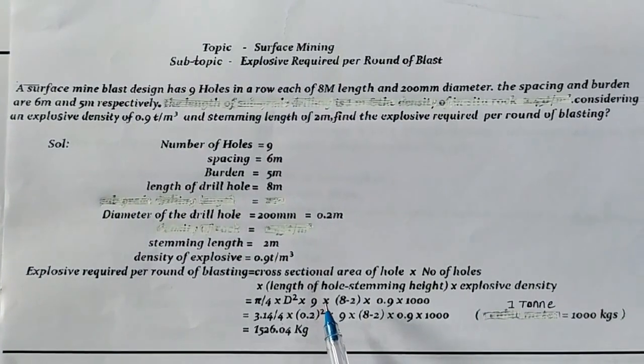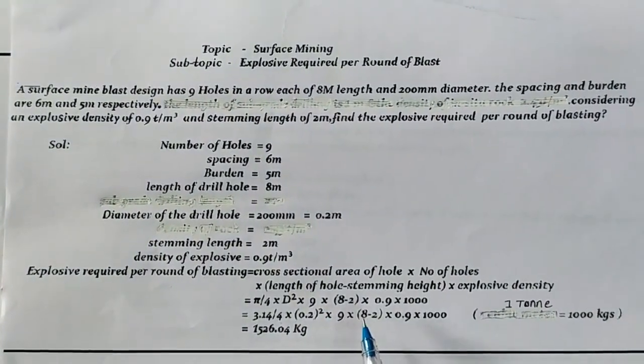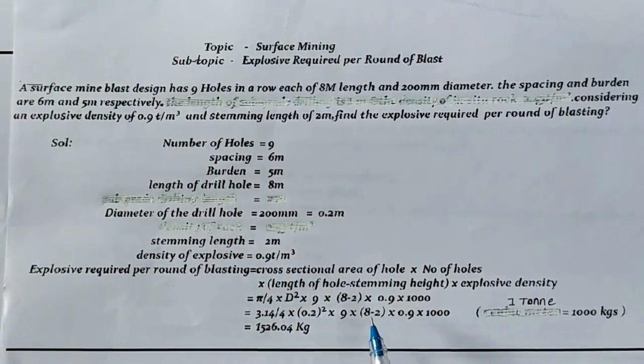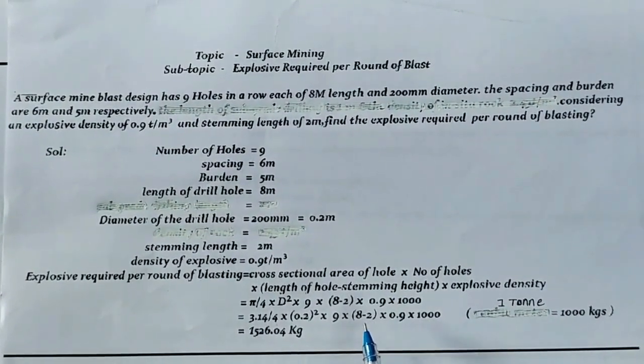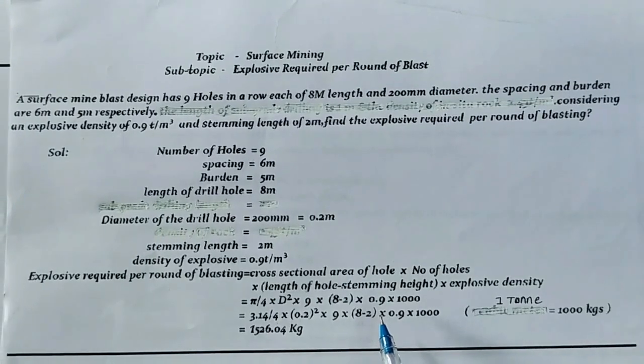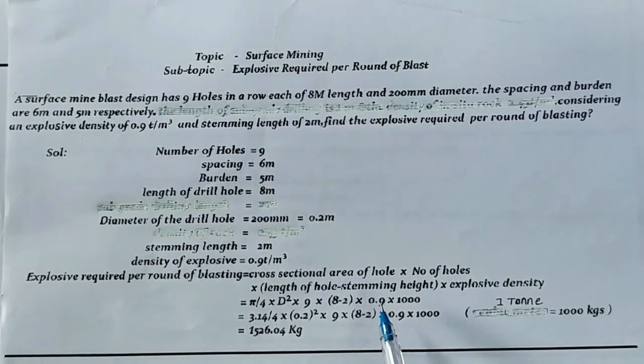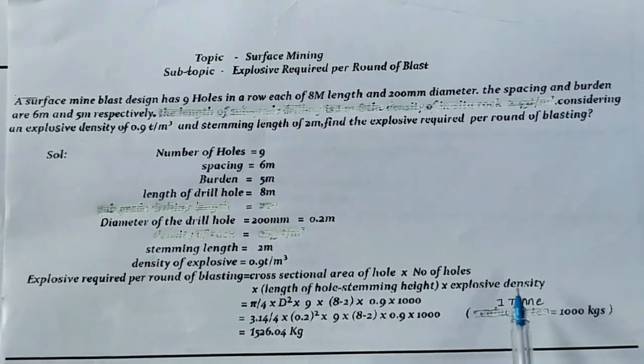9 is the number of holes. Length of each hole minus the stemming height, which is 2 meters, multiplied by 0.9 explosive density.